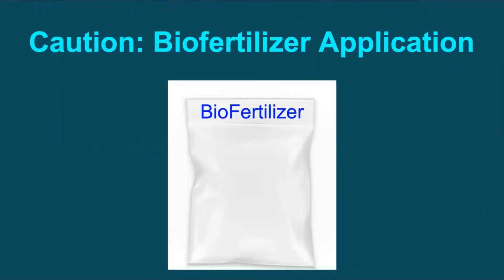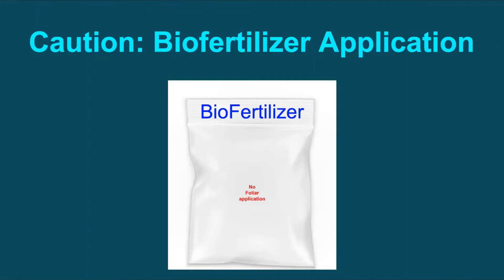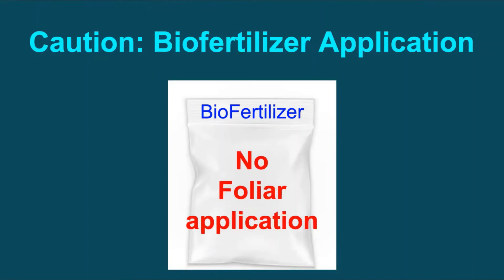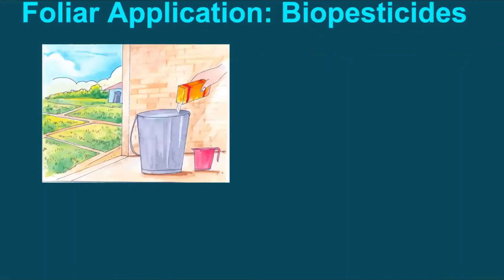It is cautioned that no microbial biofertilizers should ever be applied through the foliar method — that is, spraying over the foliage. It will be a complete wastage and will not add any value to the crop or the soil. However, in the case of microbial biopesticides being used against insect pests and foliar diseases, they need to be applied through foliar methods.